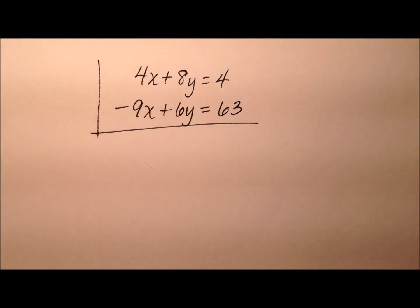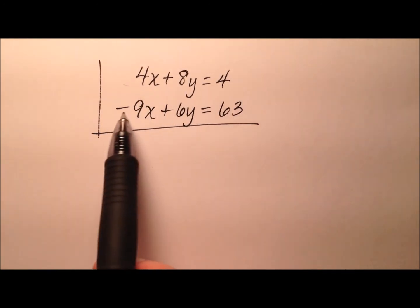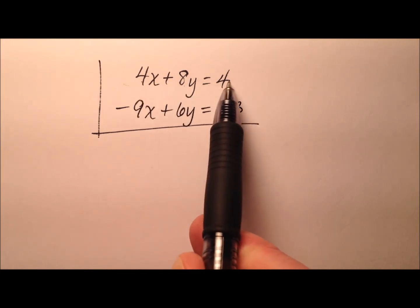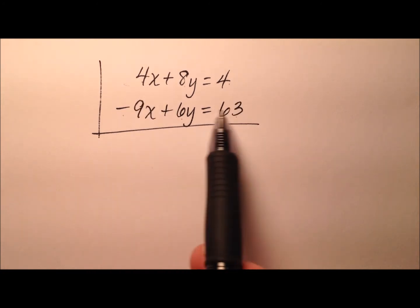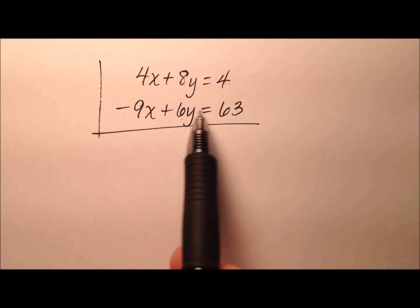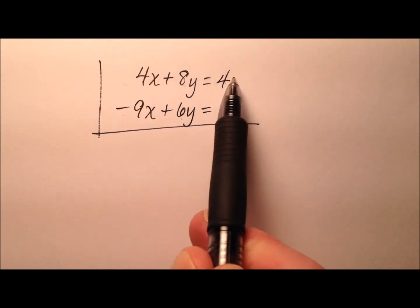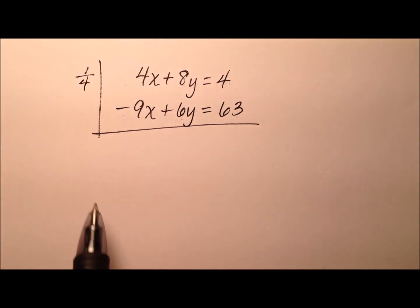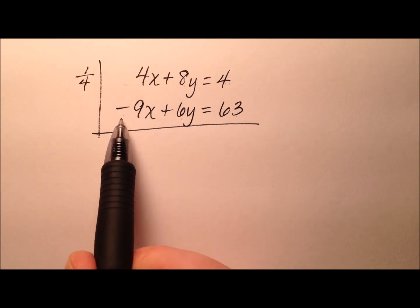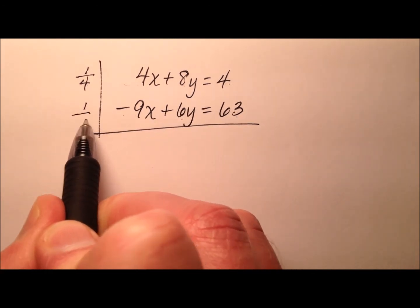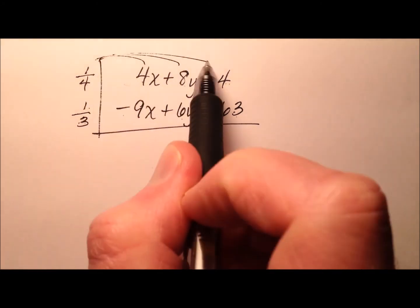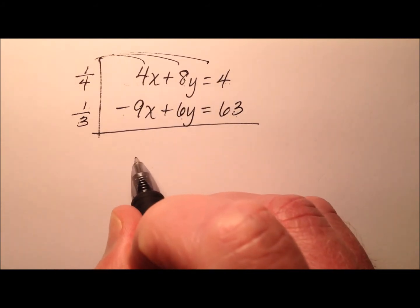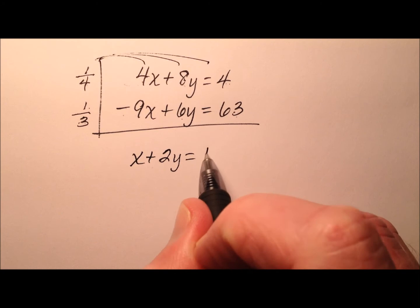In this third and final example for this video, we see that we have two equations, 4x plus 8y equals 4 and negative 9x plus 6y equals 63. Looks like both of these equations, we can divide out common terms or a common factor. The top one, it looks like I can divide out a 4. So I'll just write multiplying by 1 fourth, which is the same as dividing by 4. And it looks like for negative 9, 6, and 63, I could divide a 3 out of those. So I'll go ahead and multiply by 1 third.